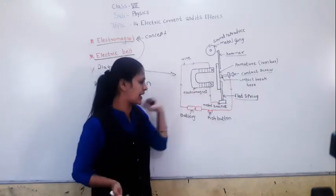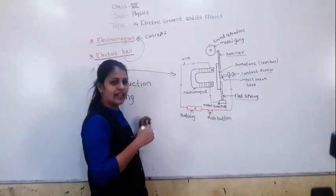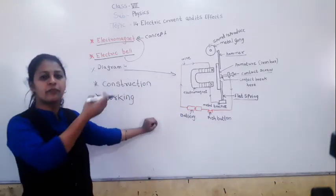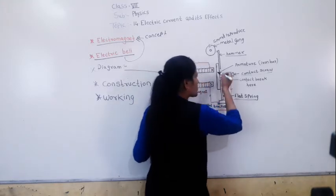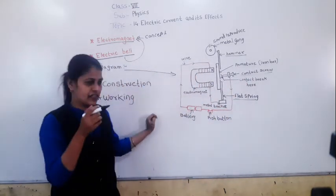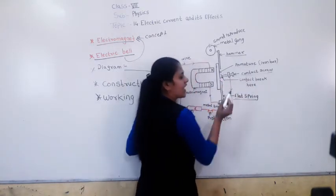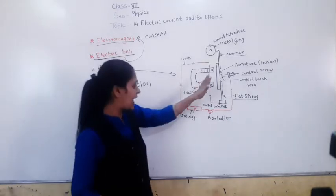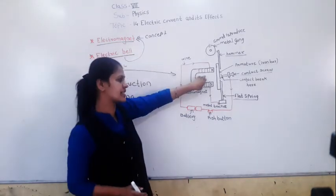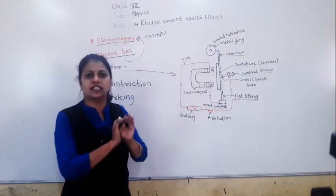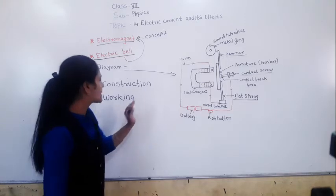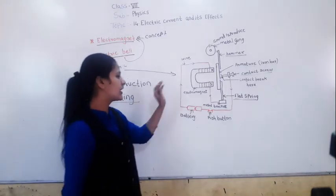As the contact breaks, the current stops flowing and the electromagnet loses its magnetism. The flat spring then pulls the iron bar — the armature — back to its original position. As the armature returns to its original position, the contact between the contact screw and the iron bar is re-established and the circuit is completed again. This cycle repeats continuously, which is the working of the electric bell.